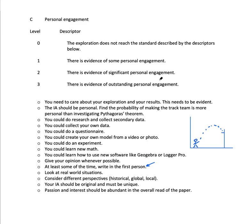So that's personal engagement. Ideally you can get three out of three — surely everyone should be getting two out of three in personal engagement. The next video will be on reflection.